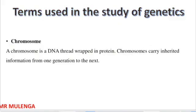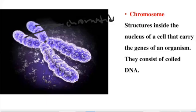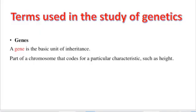A chromosome is a DNA thread wrapped in protein. Chromosomes carry inherited information that is passed on from one generation to the other. Looking at the structure of a chromosome, it has a central region in the middle and two strands called chromatids. Chromosomes are structures inside the nucleus of a cell that carry the genes of an organism, and they consist of deoxyribonucleic acid — DNA.